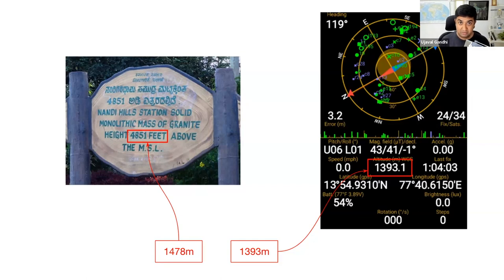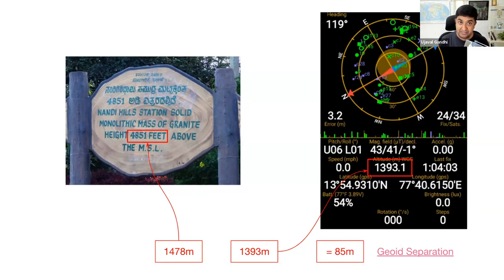The answer is both are correct, but they are using a different point of reference — different datums. The mean sea level measurement uses the geoid as a reference, so above the geoid surface this place is 1,478 meters. But using the GPS ellipsoid — the WGS84 ellipsoid that the GPS system uses — this place is 1,393 meters. This difference between the geoid and ellipsoid measurements is called geoid separation, and it varies at different places around the world. This indicates that using different datums can produce different measurements, so you need to be aware of which datum your dataset is using.